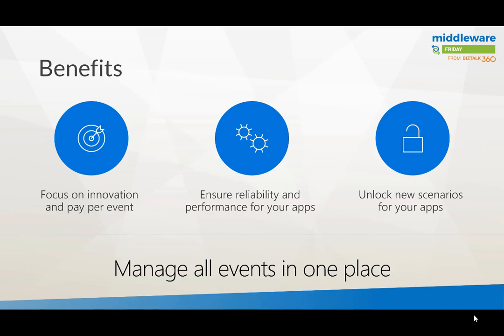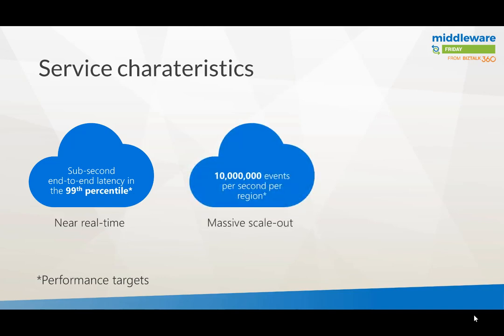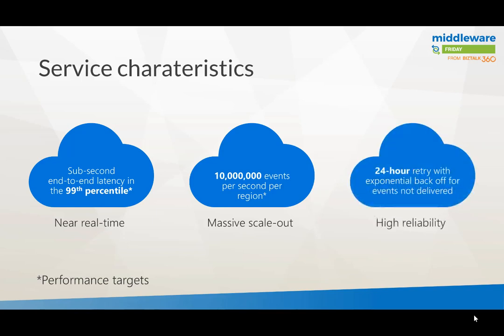It's unique in its kind and gives you new scenarios where you have publishers — sources of events — on one end, and subscribers on the other. It offers sub-second end-to-end latency in 99% of cases — a pretty steep SLA. It's near real-time and you can do 10 million events per second per region, which is massive scale thanks to Service Fabric underneath. There's also reliability: if the service drops, there's about a 24-hour retry for your events.